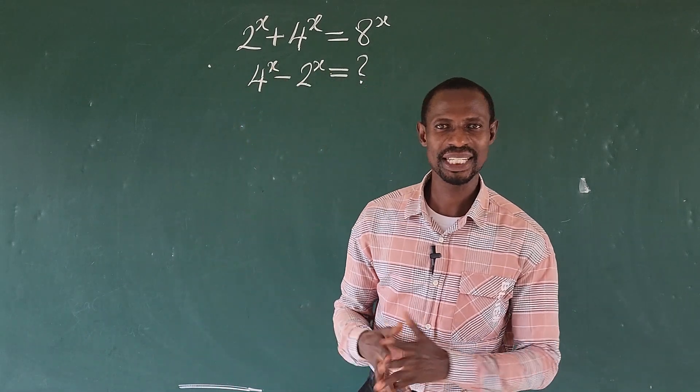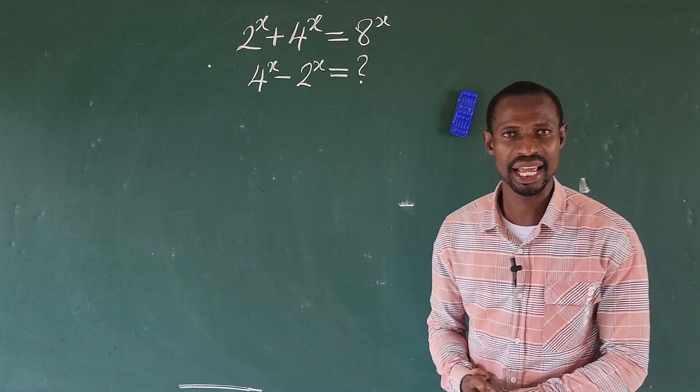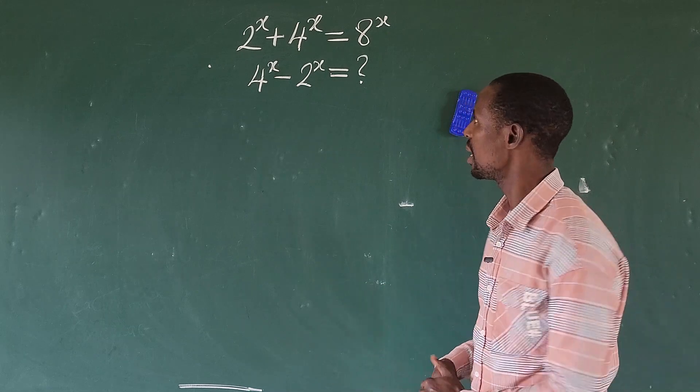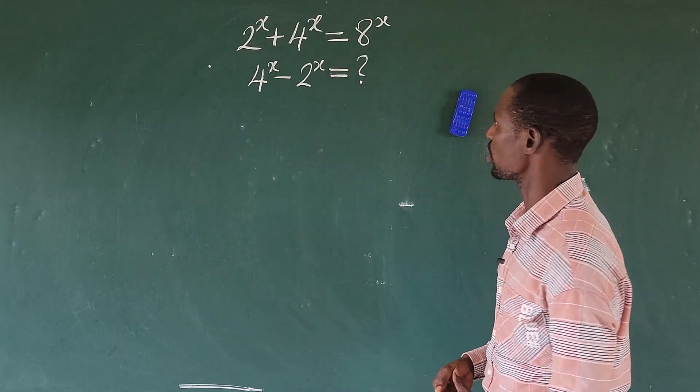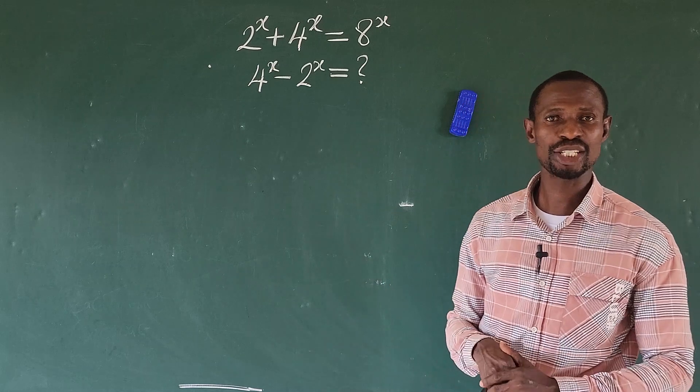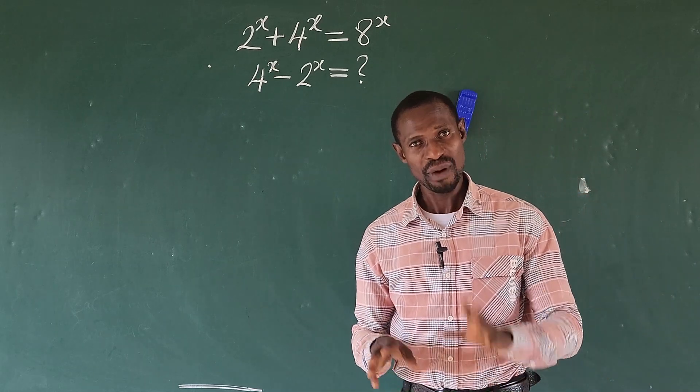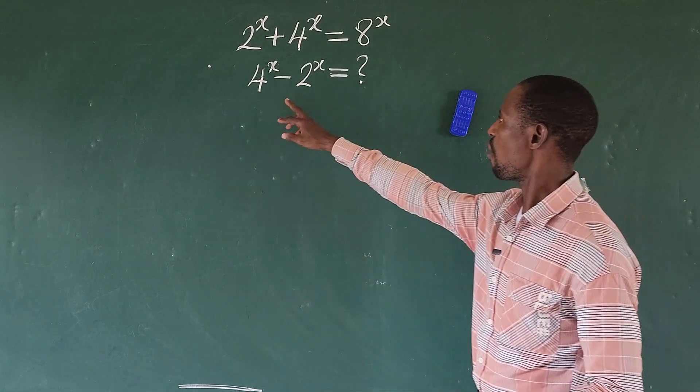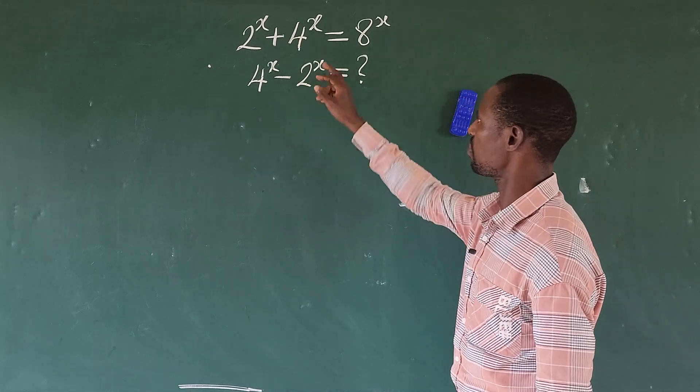Hi, welcome to today's class. Today we have this simple explanation challenge for us here. How do we solve it? This question is 2 to the power of x plus 4 to the power of x equals to 8 to the power of x. Here we are not asked to look for the value of x. We are asked to find 4 to the power of x minus 2 to the power of x.